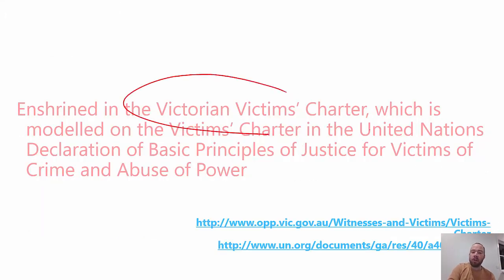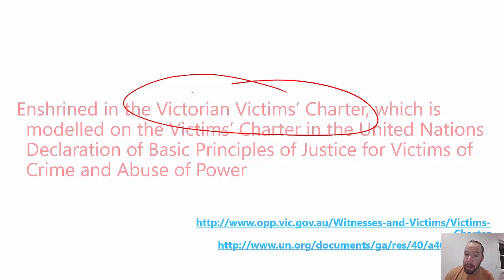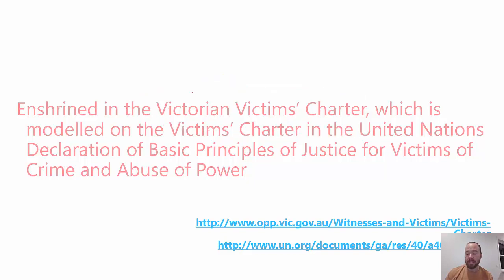All of this comes from the Victorian Victims Charter. You can easily look this up, and Victoria has basically taken it from international agreements — specifically the United Nations Declaration of Basic Principles of Justice for Victims of Crime and Abuse of Power. We've turned that into a Victims Charter that details all these things.